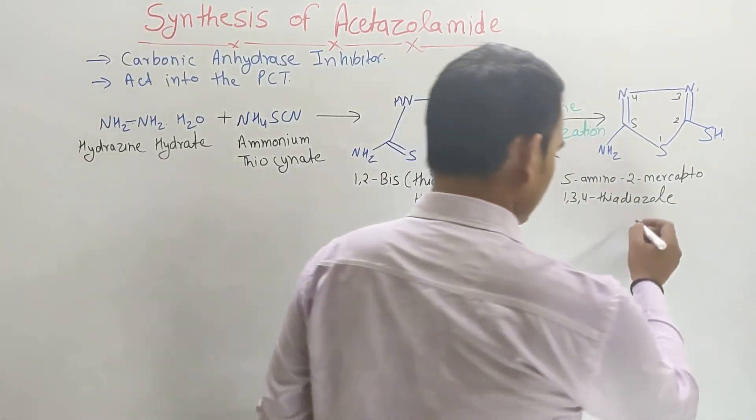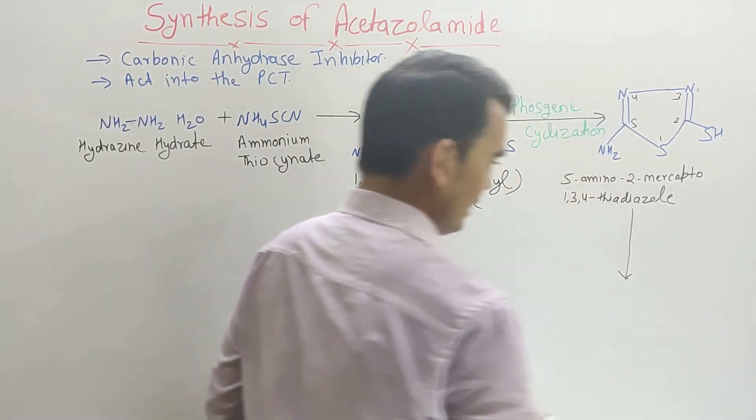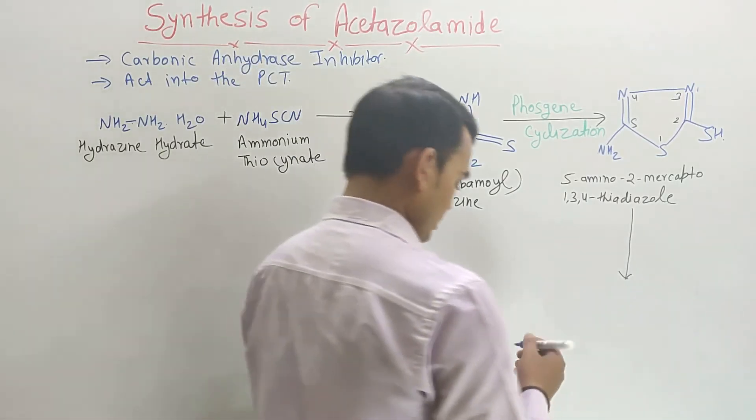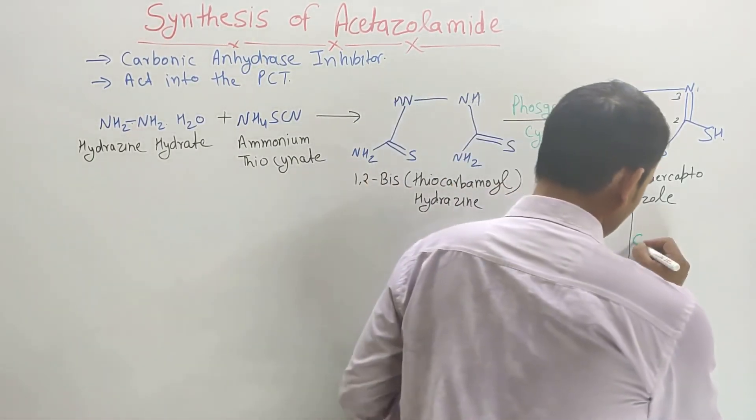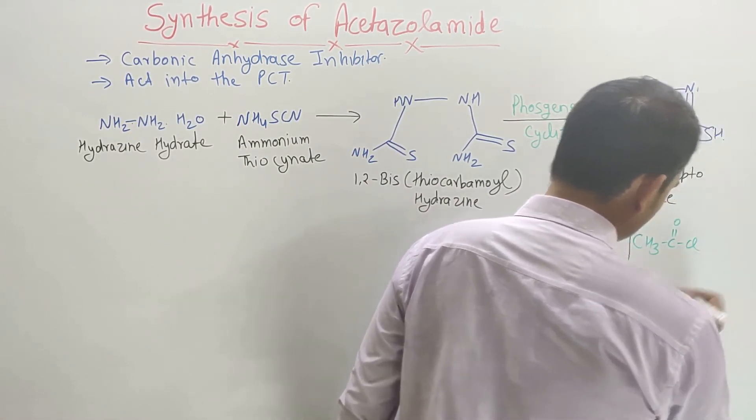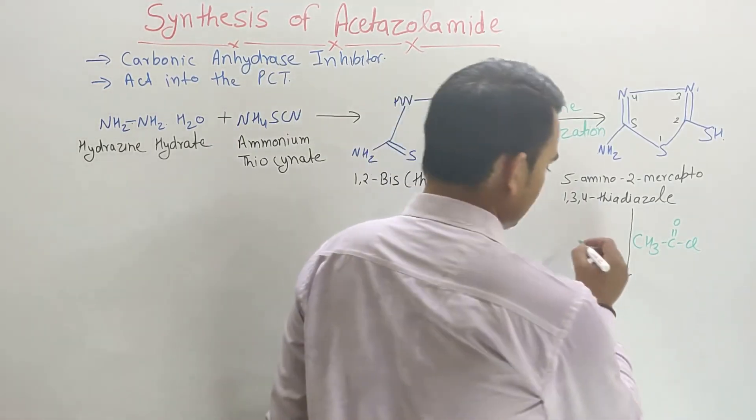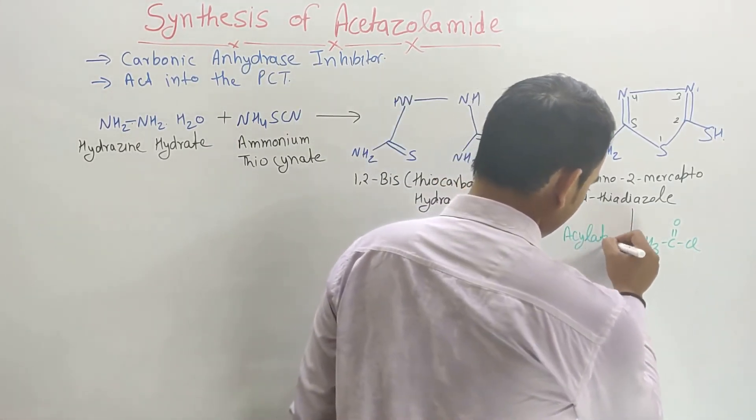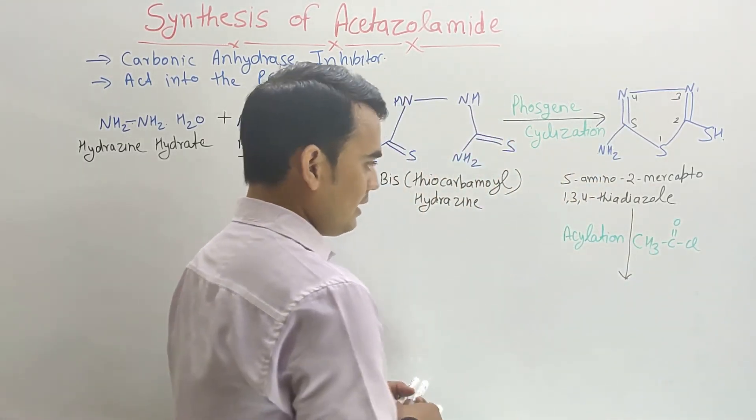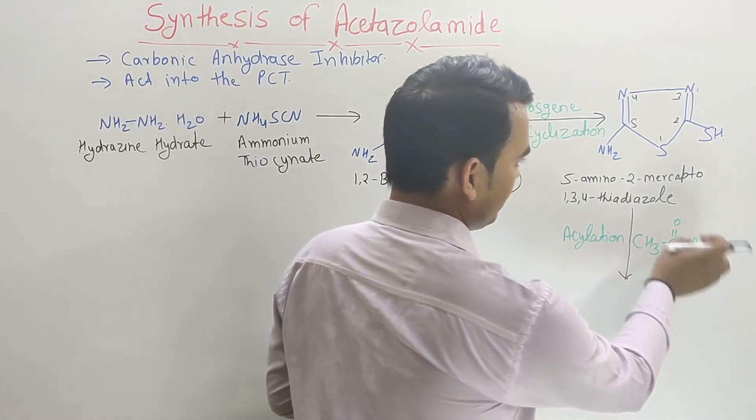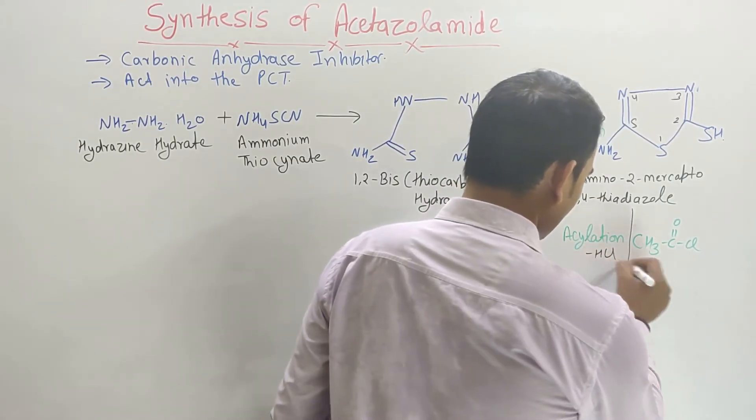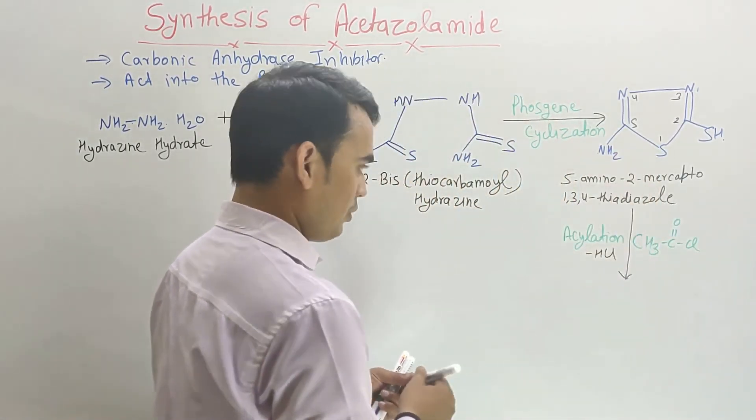Now this intermediate undergoes acetylation process in the presence of CH3COCl, acetyl chloride. Then this chloride takes this hydrogen ion and removes it in the form of HCl. Here HCl will be removed and this will be added on this amino group.